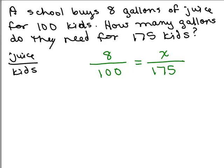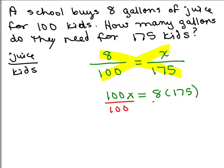If I went ahead and did my cross products here, I have 100 times x equals the other cross product, 8 times 175. Now, you could go ahead and multiply 8 times 175, and if you have a calculator, it's pretty easy to do. The way I do this is by reducing things. So, I'm just going to go ahead and divide both sides by 100, and use canceling, because I never have my calculator around.